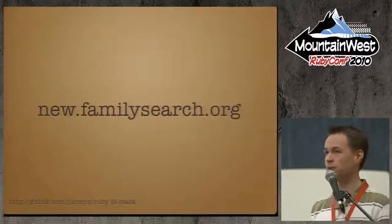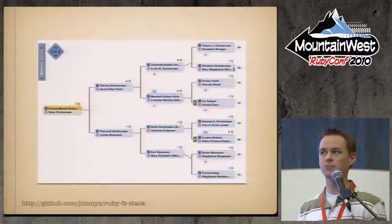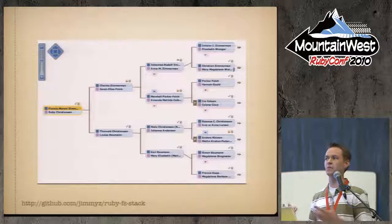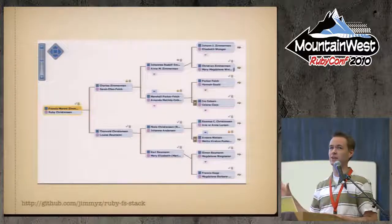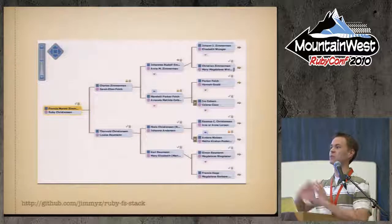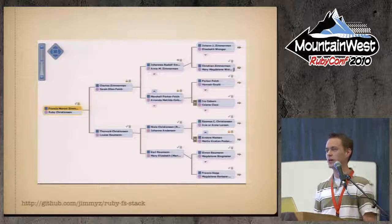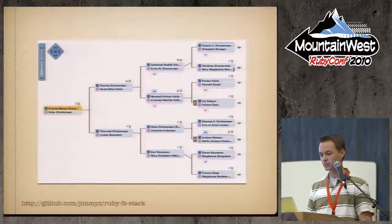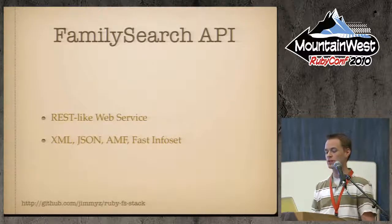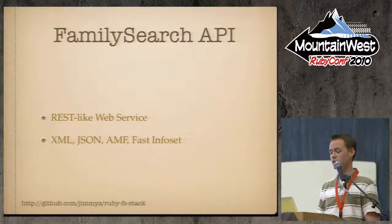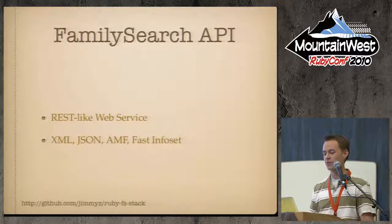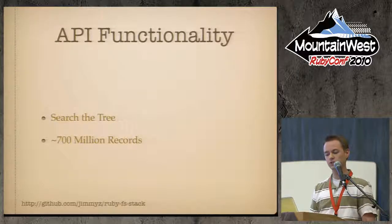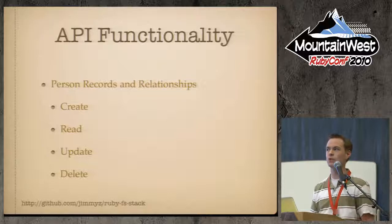What I really want to talk about is New FamilySearch — a collaborative family tree where people can get on and add information about ancestors. If you go back a couple of generations, you're going to connect with a giant family tree and go way back in time. There's a FamilySearch API that connects to this family tree — about 700 million person records. It's a REST-like web service interface that serves up XML, JSON, AMF, and Fast InfoSet. You can search, create, read, and manipulate person records through this API.